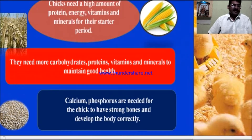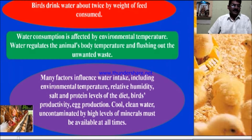They need a high amount of protein, energy and vitamins and minerals for their starter period. They need more carbohydrates, proteins, vitamins and minerals to maintain good health and develop the body correctly. Birds drink water about twice by weight of feed consumed. Water consumption is affected by environmental temperature.